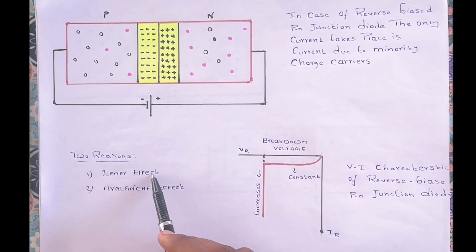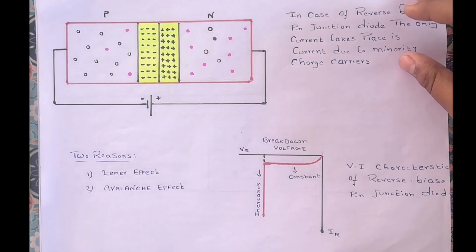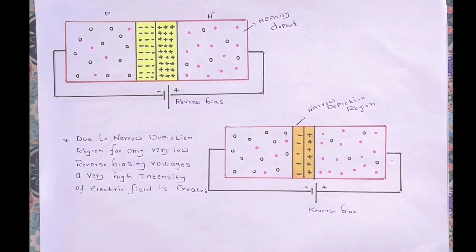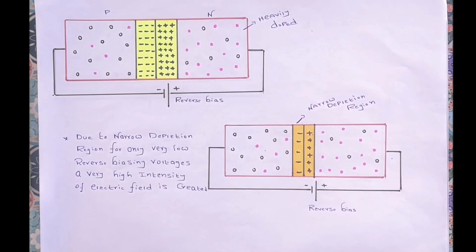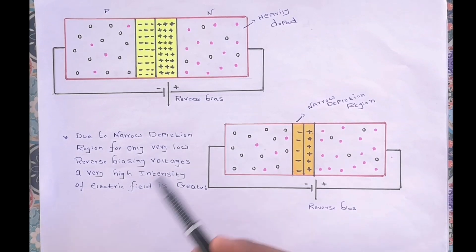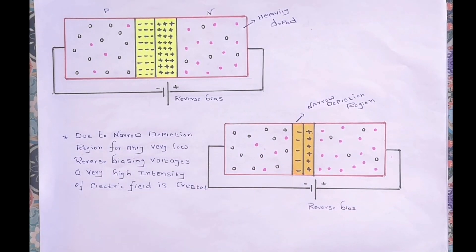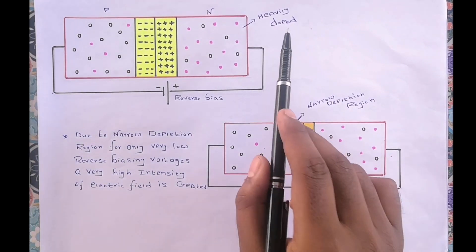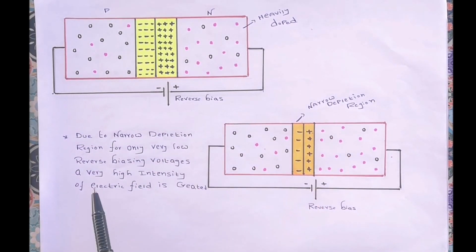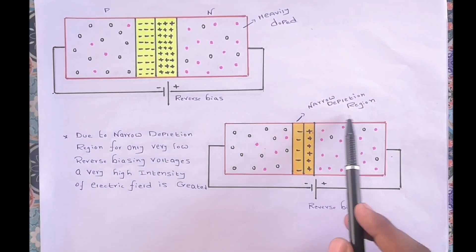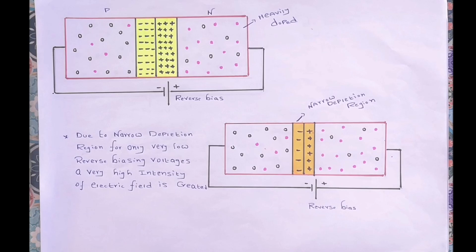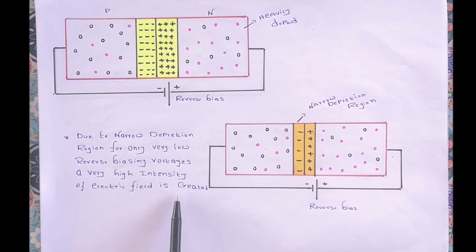Now let us discuss about Zener effect or Zener breakdown. Zener breakdown usually occurs in heavily doped PN junction diodes, meaning the impurity concentration level is very high. We know that if the doping concentration is very high, the depletion region becomes narrow. Due to this narrow depletion region, even for very low reverse biasing voltages, a very high intensity electric field is created.